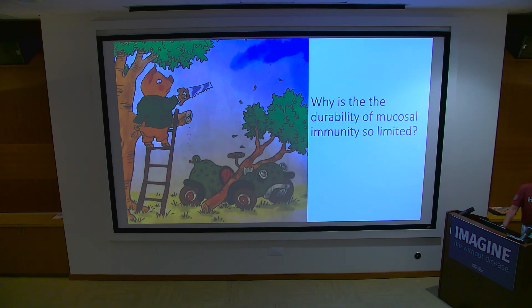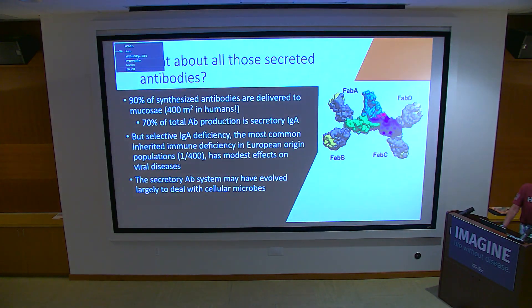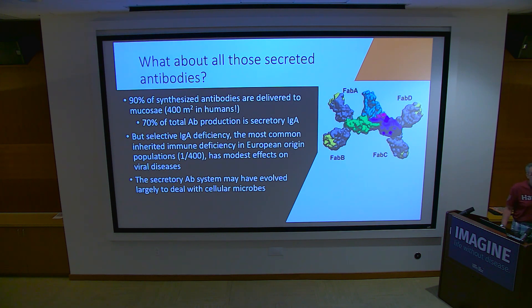90% of the antibodies we make are delivered to mucosa. 70% of total antibody produced — even though we rarely measure it — is IgA. Yet selective IgA deficiency, the most common inherited immunodeficiency in European-origin populations at one in 400, has modest effects on viral disease. Maybe the secretory antibody system evolved primarily for bacteria, not viruses.